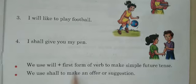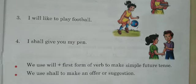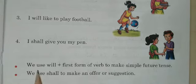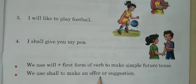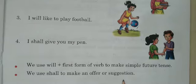We use will plus first form of the verb to make Simple Future Tense. हम जब Simple Future Tense बनाते हैं, तब उसमें will का यूज़ करते हैं, और word की first form ही आती है. We use shall to make an offer or suggestion. हम shall का यूज़ करते हैं जब कोई offer हो, या कोई suggestion हो, कोई सलाह हो — तब हम shall का यूज़ करेंगे.